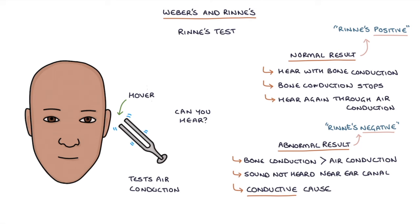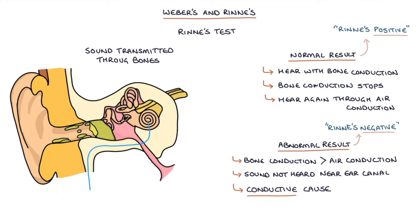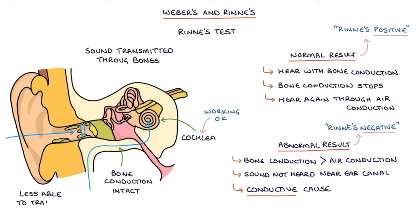Sound is transmitted through the bones of the skull directly to the cochlea during the bone conduction portion of the test, meaning that bone conduction is intact and the sensory system of the ear is working. However, the sound is less able to travel through the air, the ear canal, tympanic membrane and middle ear to reach the cochlea due to a conductive problem.